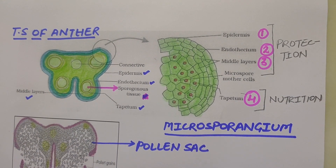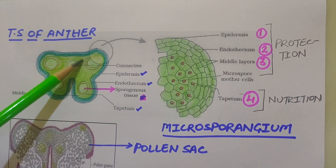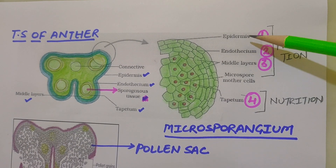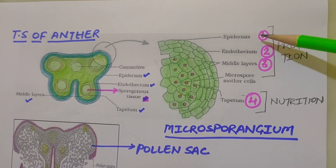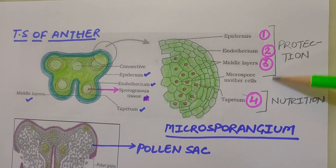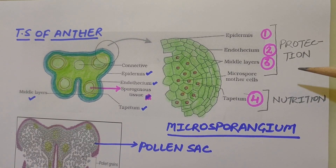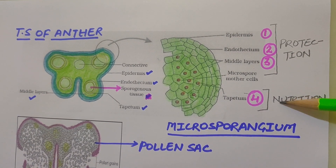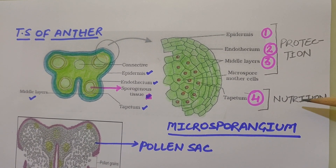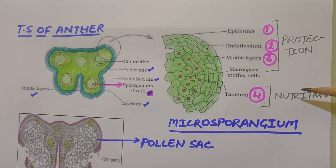If we talk about the microsporangium structure in transverse section, we can see that it is circular in outline. It is surrounded by four wall layers: epidermis, endothecium, middle layers, and tapetum. The outer wall layers perform the function of protection and help in dehiscence of the anther to release the pollen. The innermost wall layer is called tapetum. It nourishes the developing pollen grains, and the cells of tapetum possess dense cytoplasm and generally have more than one nucleus.